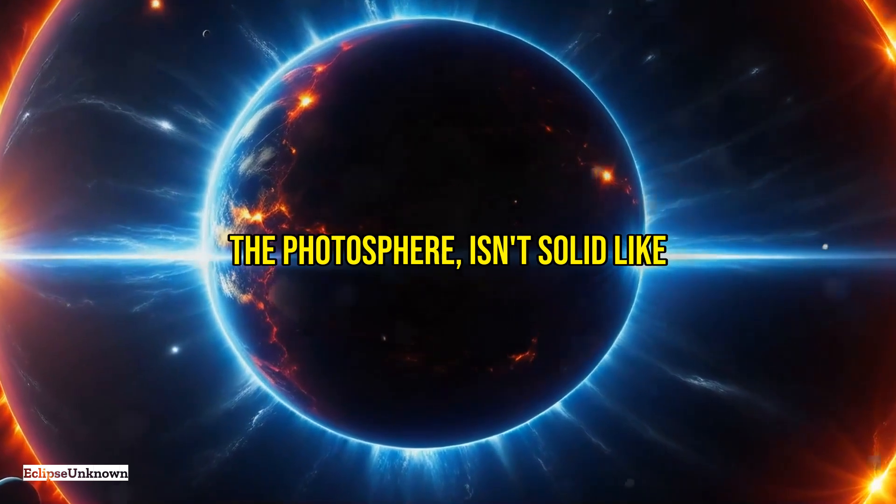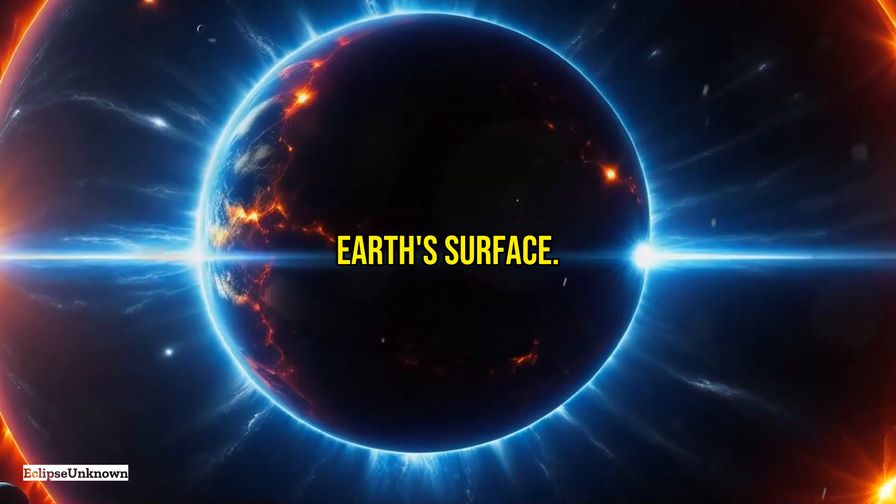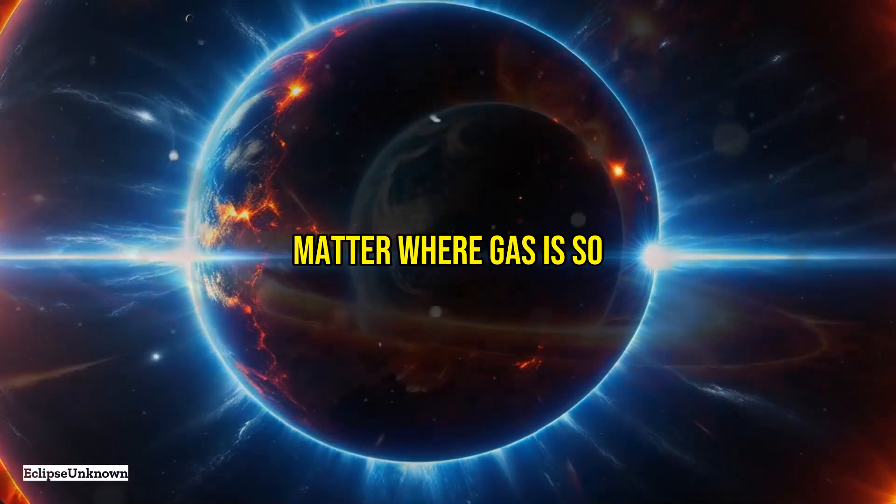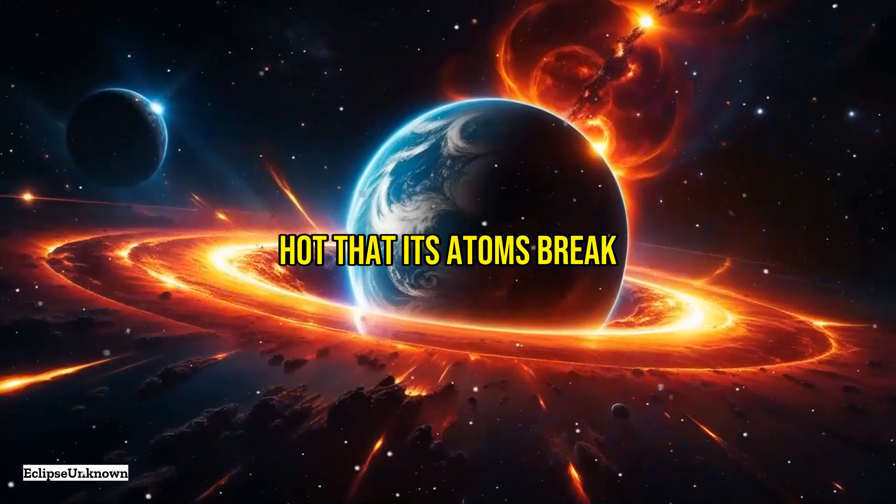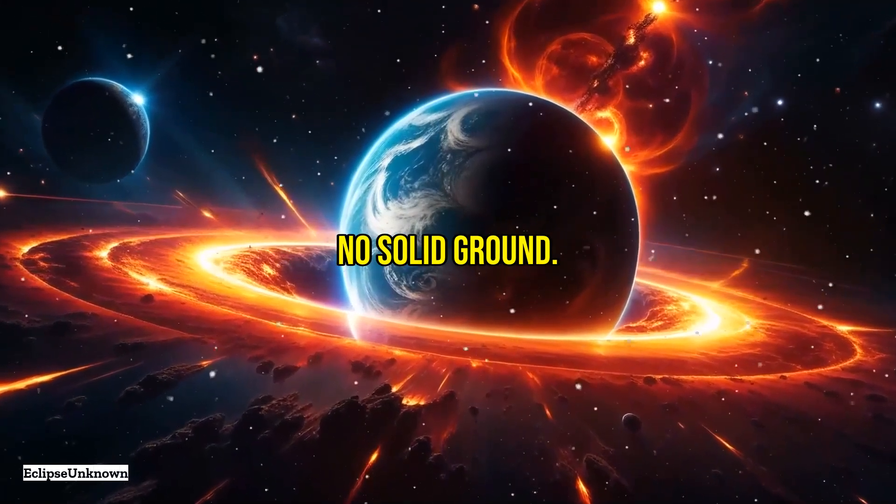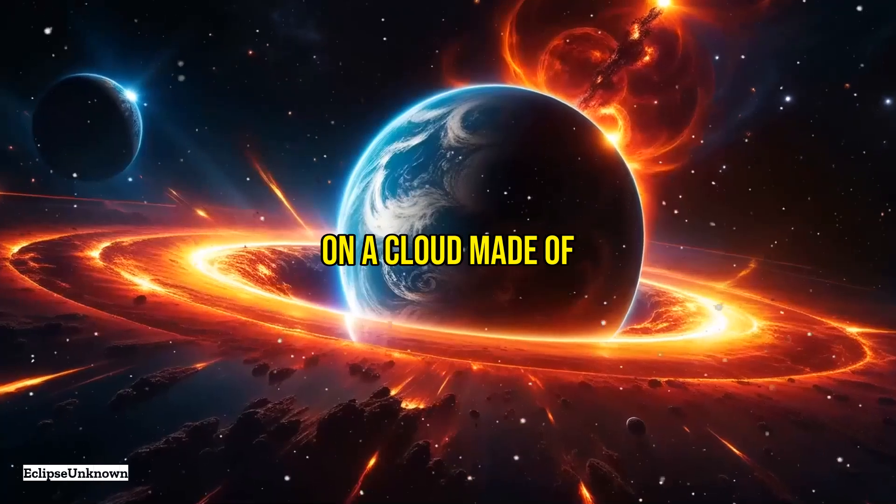The sun's surface, known as the photosphere, isn't solid like Earth's surface. It's a layer of hot plasma. Plasma is a state of matter where gas is so hot that its atoms break apart into charged particles. This means you can't actually jump on it since there's no solid ground. It's like trying to jump on a cloud made of lightning.